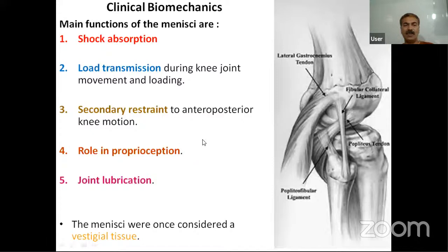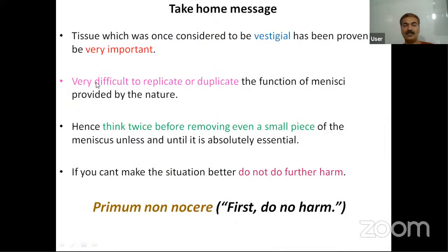Finally, the basic functions of the menisci: shock absorption, load transmission, secondary restraint, proprioception, and joint lubrication. Once the menisci were considered vestigial tissue. The take-home message is that this tissue, once considered vestigial, has been proven to be very important — very difficult to replicate. Think twice before removing even a small piece of meniscus. Primum non nocere — first, do no harm. Thank you.